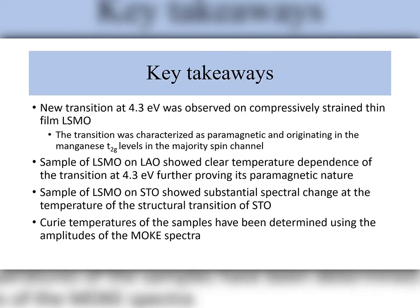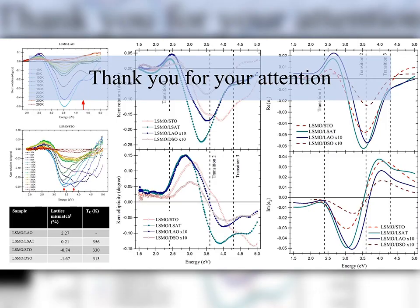That is all for my presentation. The key takeaways were: the newly observed paramagnetic transition at 4.3 eV on compressively strained samples; the clear magnification of that transition on LSMO on LAO at low temperatures, proving it to be paramagnetic; the possibility of using structural transitions of a substrate for inducing substantial epitaxial strain, as verified by the LSMO sample on STO; and lastly, determining the Curie temperatures of the samples from the temperature dependence of the MOKE spectra. I look forward to your questions and comments at the conference in September. Have a nice day!